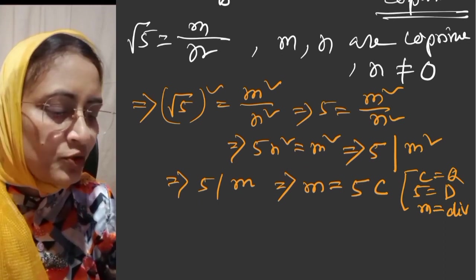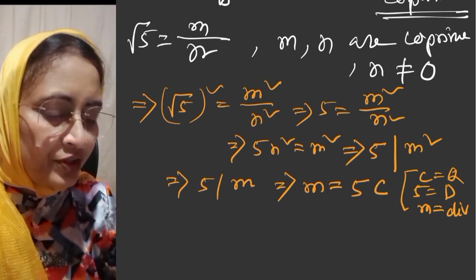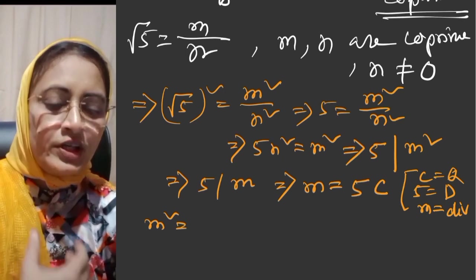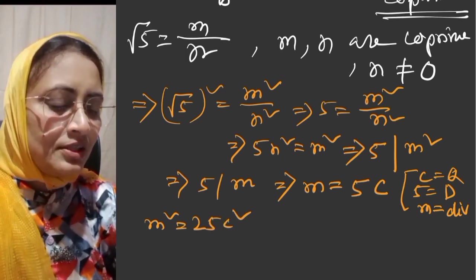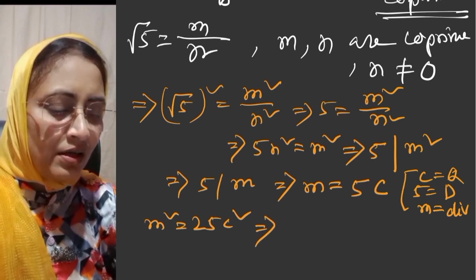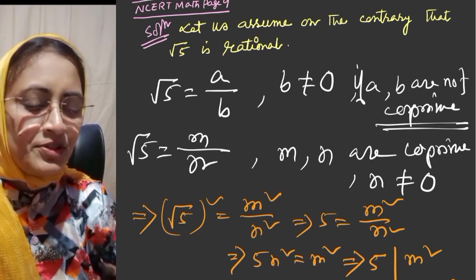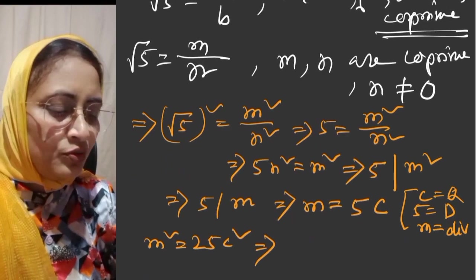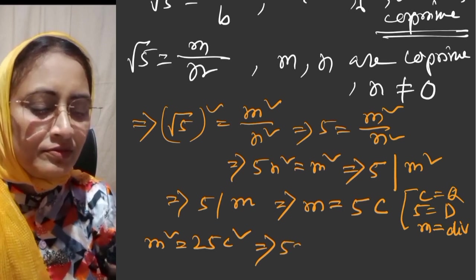Now if we square both sides, m square is equal to 25c square. Also, from earlier we have m square is equal to 5n square.